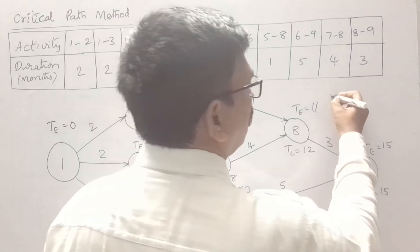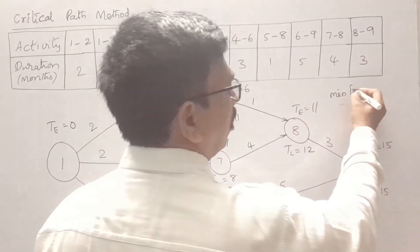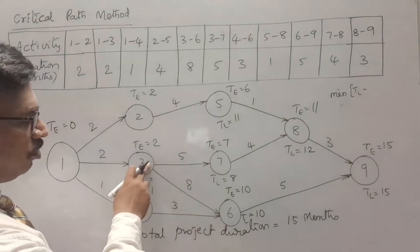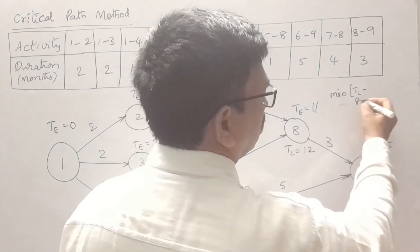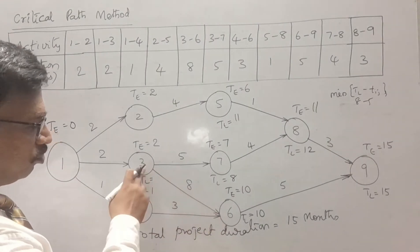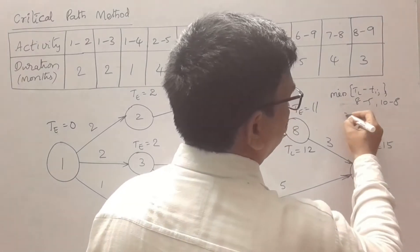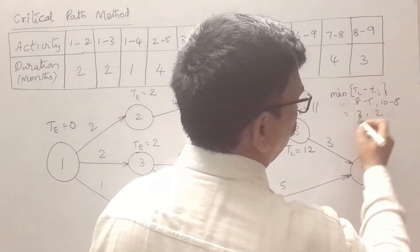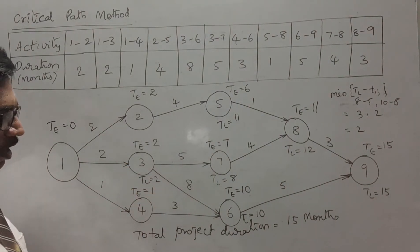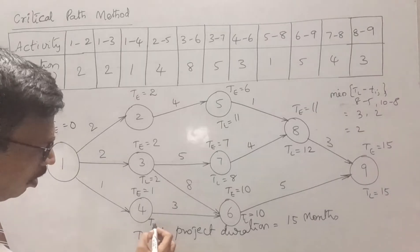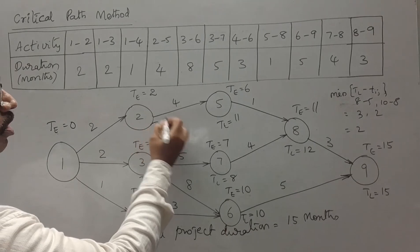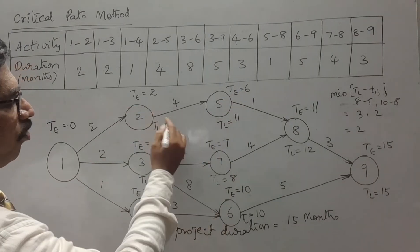When moving backwards, we take the minimum of TL at the head node minus the activity duration. Among the values 3 and 2, the minimum is 2, which corresponds to the path from node 6 to node 3. So TL = 2 at node 3. For node 4, TL = 10 minus 3 = 7. For node 2, TL = 11 minus 4 = 7.